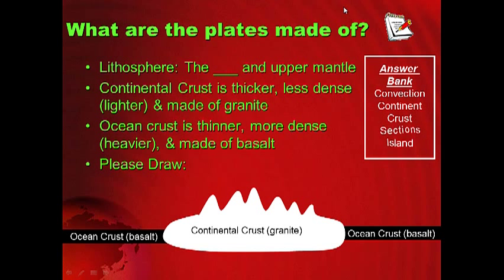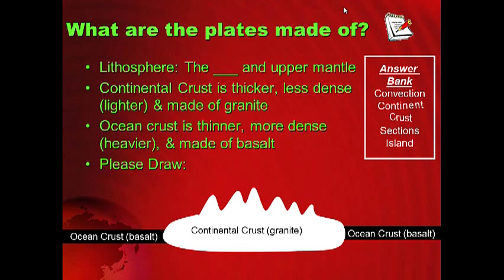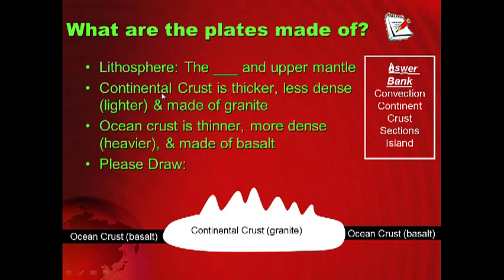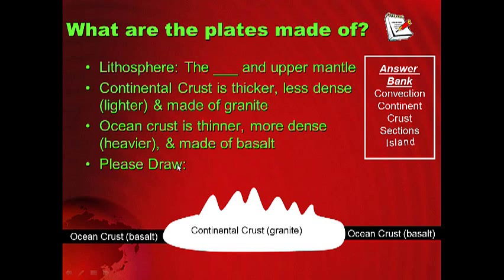For your notes: what are the plates made of? The lithosphere — the blank and upper mantle. Continental crust is thicker, less dense, lighter, and made of granite. Ocean crust is thinner and more dense, heavier, made of basalt. Draw this picture. Remember to write the question in the question section and the answer in the answer section, and use the answer bank. Go ahead and pause this while you write.